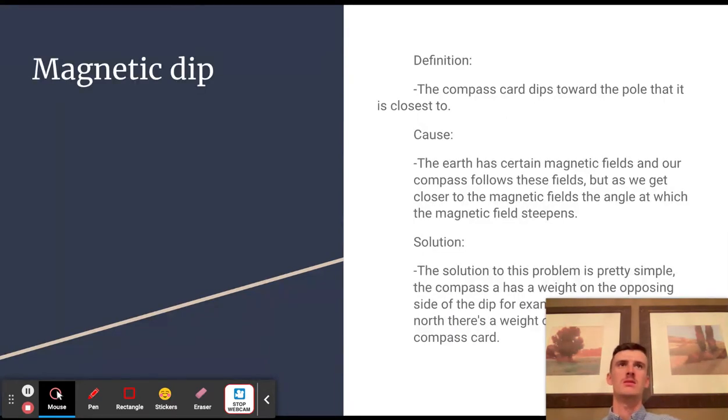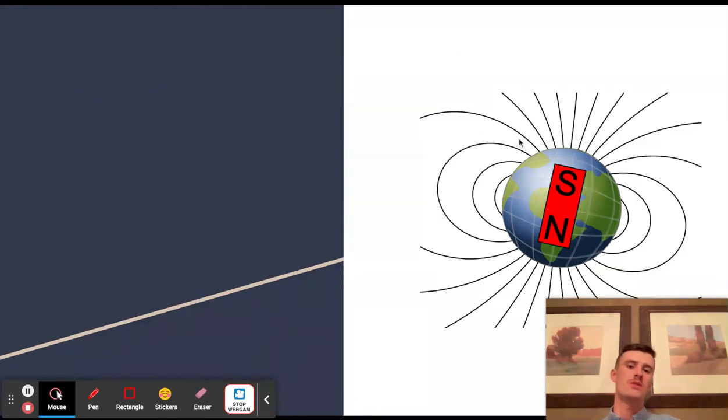As it gets closer to the north pole, the angle of the actual dip gets steeper and steeper. As you get further and further up, the compass will start to tilt more and more. As you get up to the north, it's almost vertical.